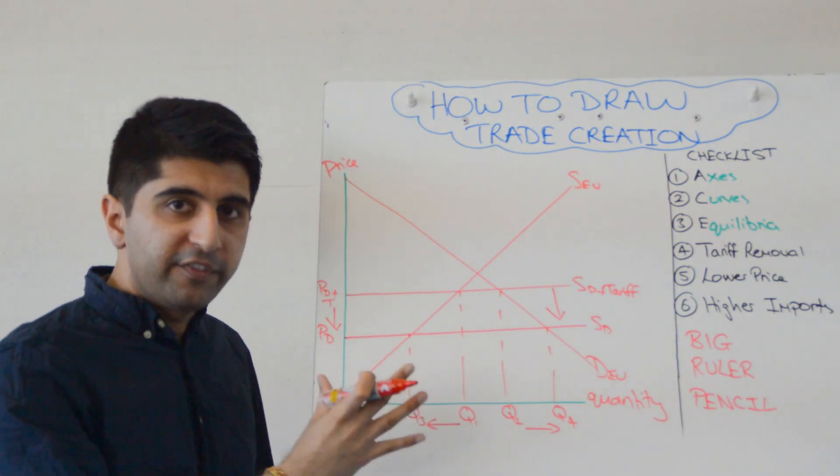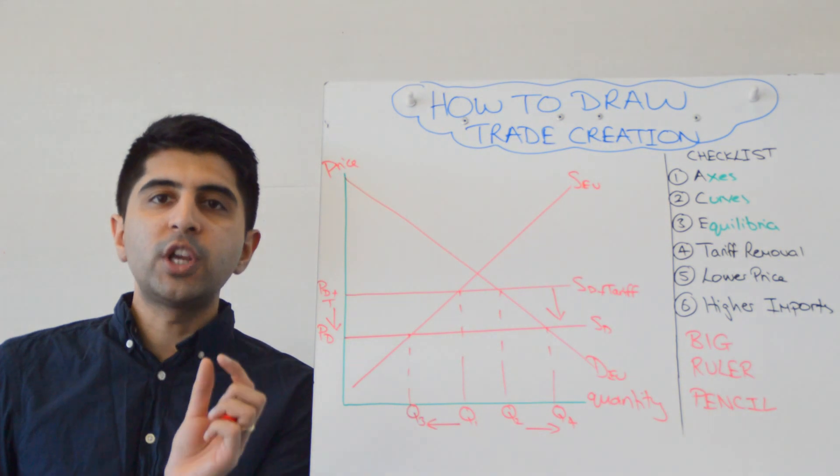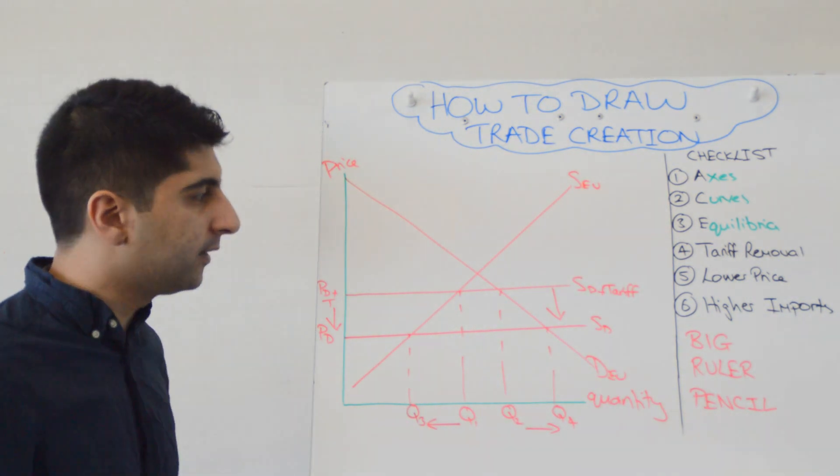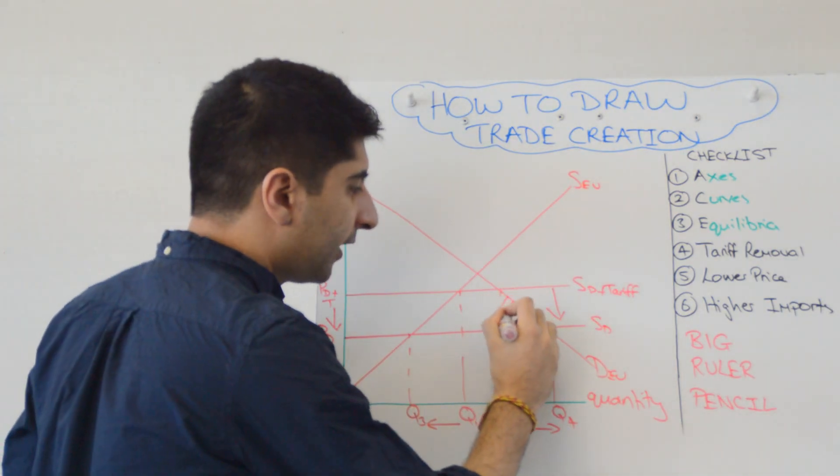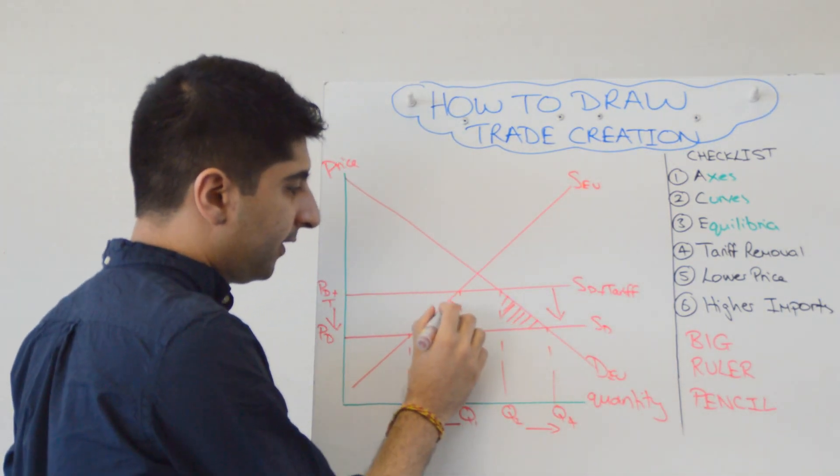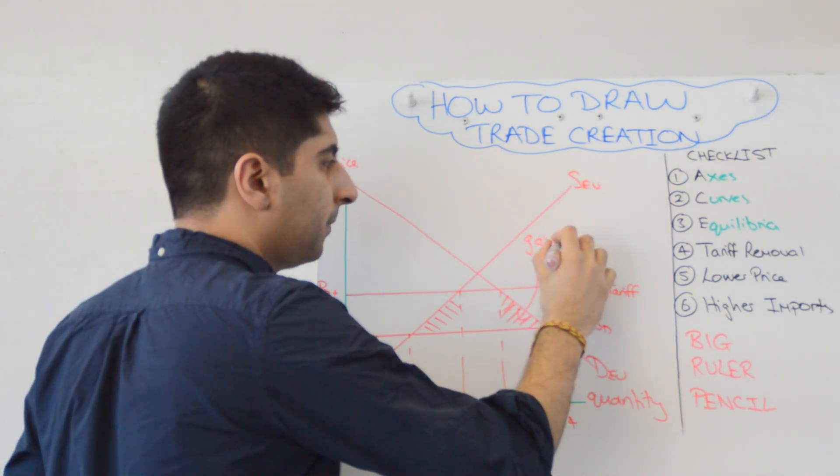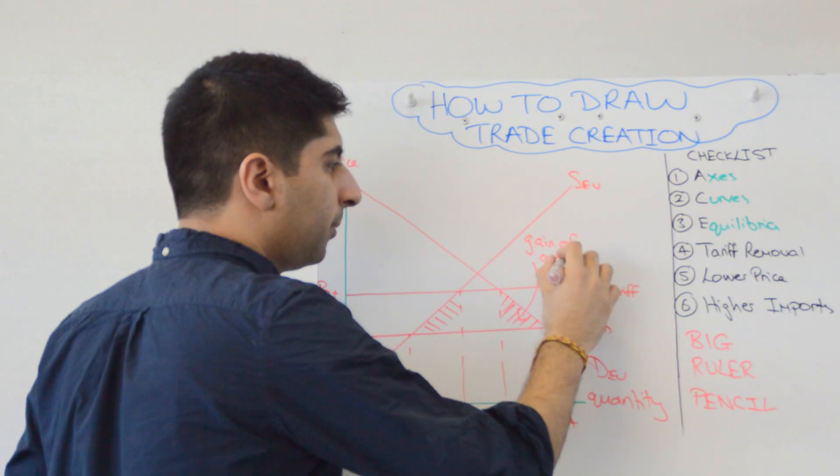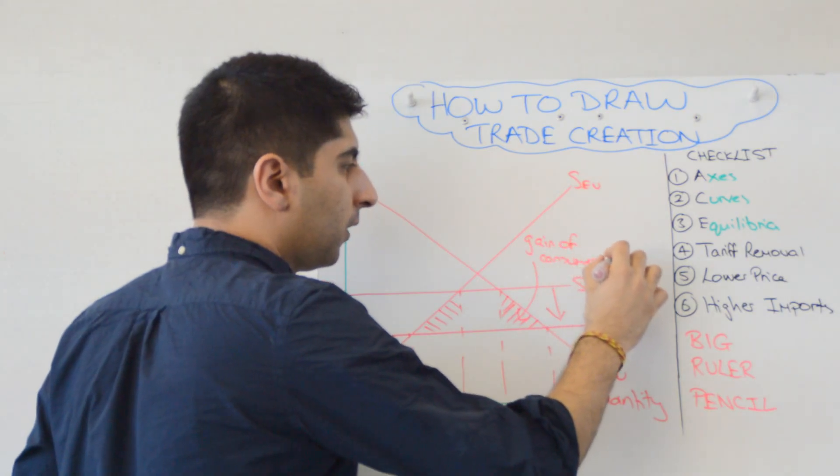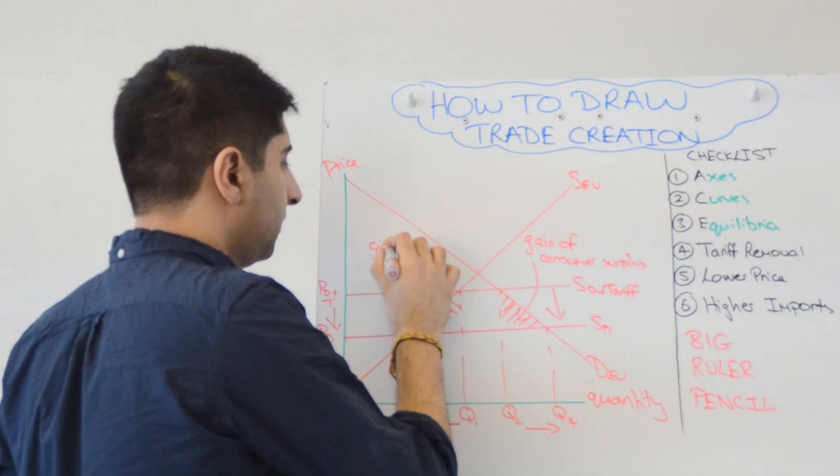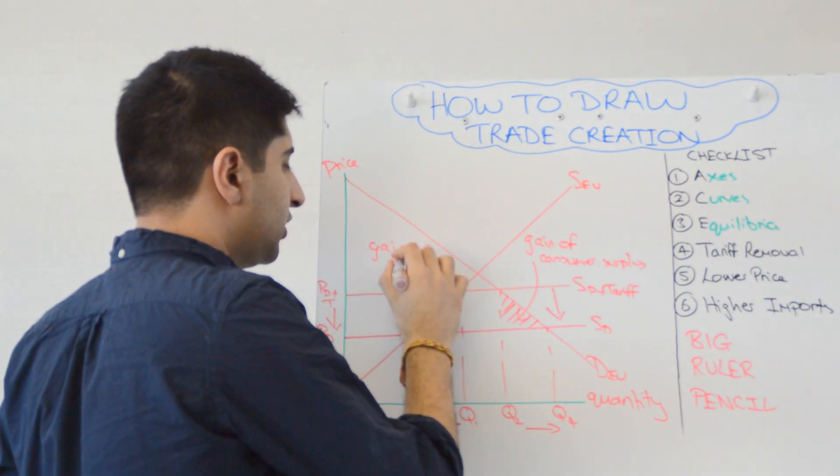We are not quite finished yet. Now we need to shade in a few parts of these diagrams to make some important analysis points. We're going to shade in this right-hand triangle here. We're going to shade in this left-hand triangle here. We're going to label this a gain of consumer surplus. And we're going to label this a gain of efficiency.